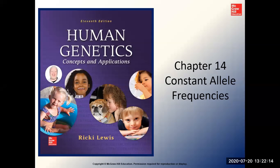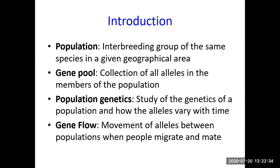Today's chapter is chapter 14, constant allele frequencies. Allele frequencies means the rate at which particular alleles — we have two of each — occur. Constant or variant alleles have a very important influence on our heredity transmission.